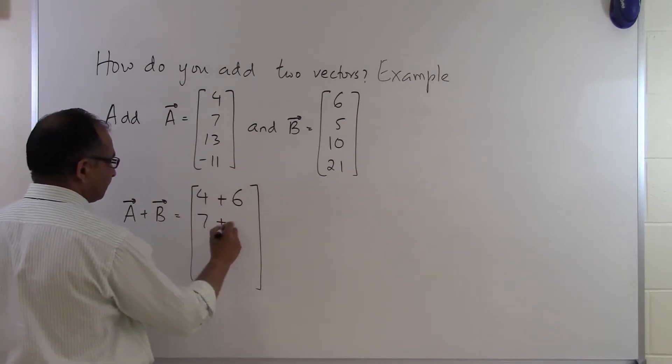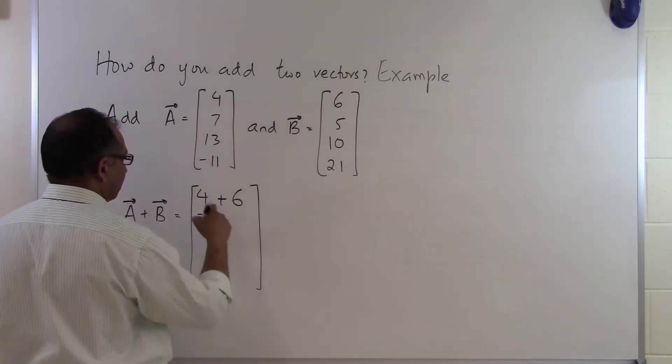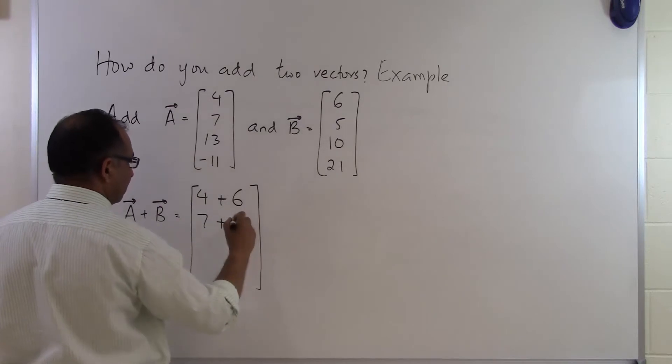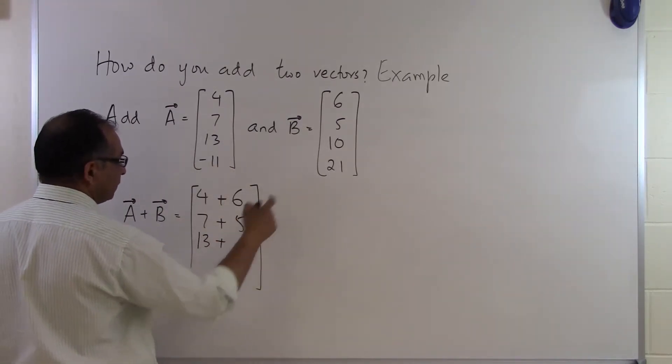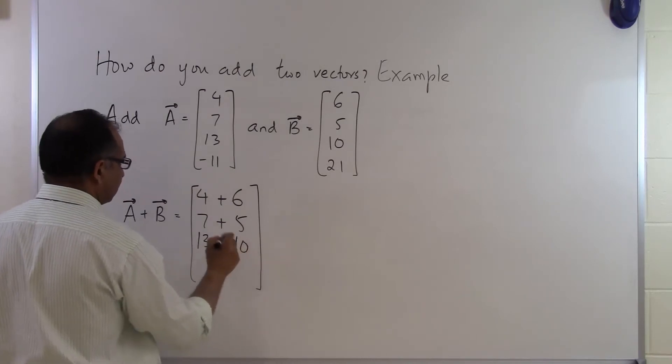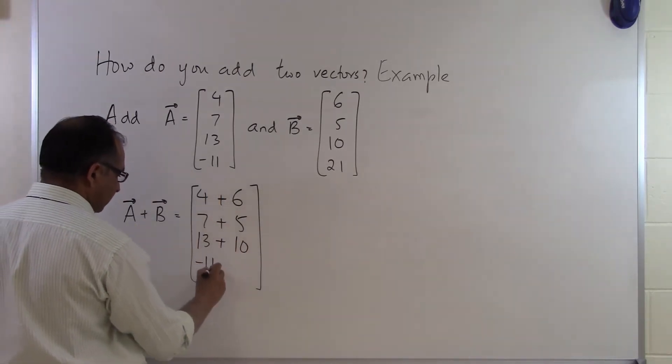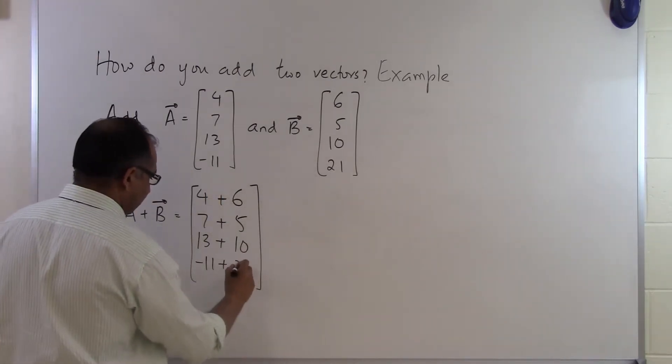Take the second component here and the second component here, that's 7 plus 5. Third component here you've got 13 and the third component here which is 10. Fourth component here minus 11, the fourth component here which is 21.